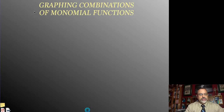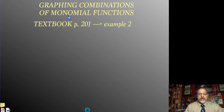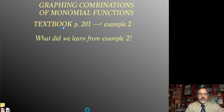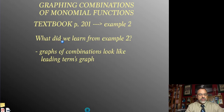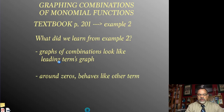Now we want to look at graphing these combinations of monomial functions — what are the characteristics of the graph? There's a discussion on page 201, example 2, that gives more background. What we learn is that the graphs of these combination functions look like the leading term's graph. The term in front — x cubed, x to the fourth, x to the fifth — the entire graph ends up looking like that. The other terms affect what happens around the zeros, where it crosses the x-axis.